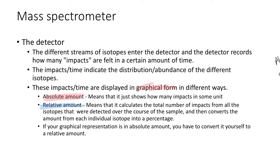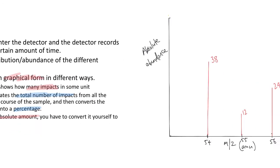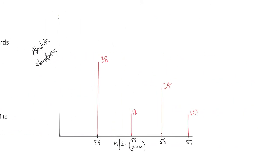So the absolute amount shows how many impacts. The relative amount takes that total number of impacts and then does the maths for you and turns it into a percentage. If you have an absolute amount, you need to convert it to a relative amount. You don't actually, but it's always good to do so because it's good maths.